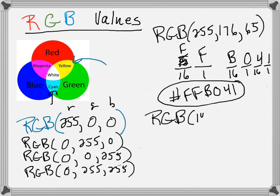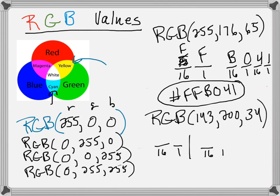Let's do another one: RGB(143, 200, 34). What would its hexadecimal code be? For red — 143: 16 goes into 143 eight times, and the remainder is 15, which is F. So 143 decimal is 8F in hexadecimal.